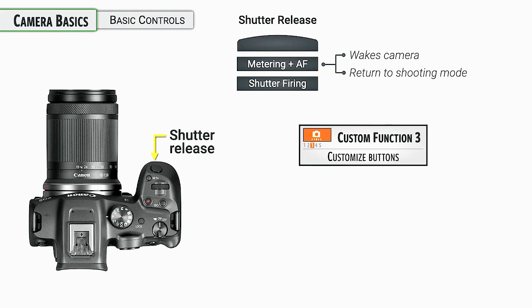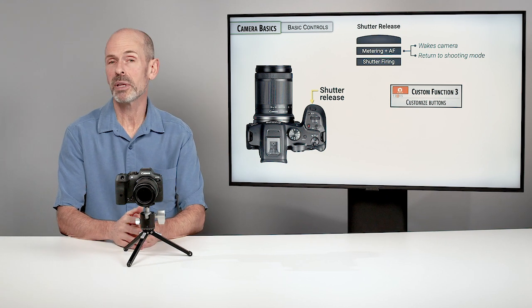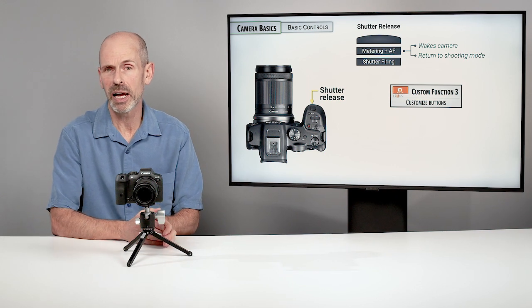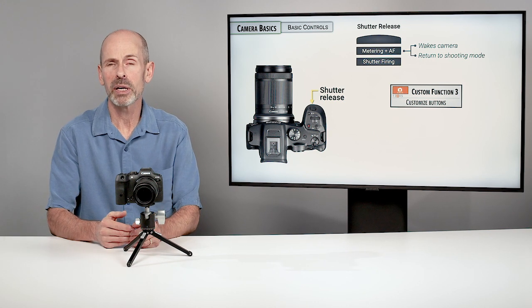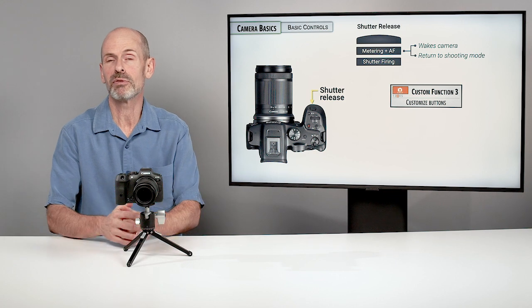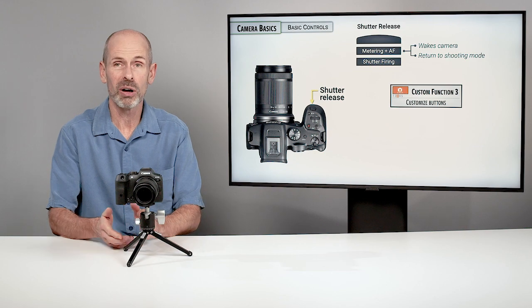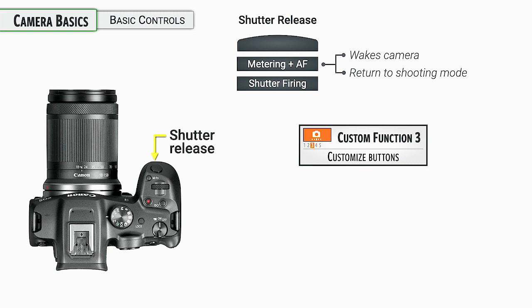Under custom function number three, you can customize various buttons, including the shutter release. For example, if you prefer back-button autofocus, you can turn off focus engagement when pressing halfway down, so a separate button handles focusing. There are good reasons for having this turned on or off, which will be discussed later — it's found in custom function number three in the menu system.